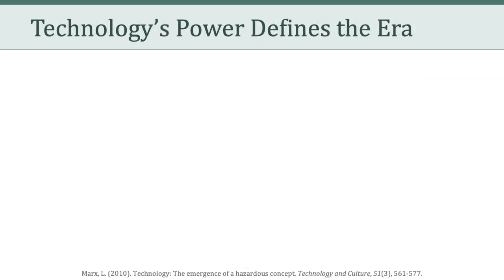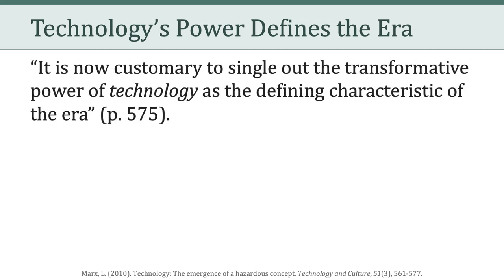The first idea comes from an article called "Technology, the Emergence of a Hazardous Concept" by Leo Marx. In this article, Marx talks about this idea that technology's power defines an era. He writes: it is now customary to single out the transformative power of technology as the defining characteristic of the era.